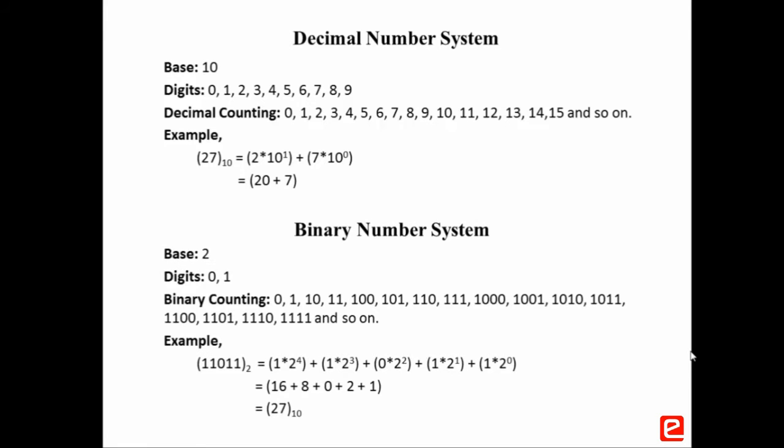Second is the binary number system, which is also known as the base 2 system. Binary is the natural way most digital circuits represent and manipulate numbers. Binary numbers use only 0 and 1 as digits.